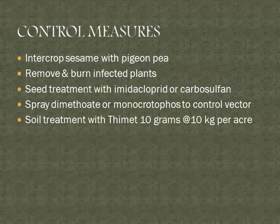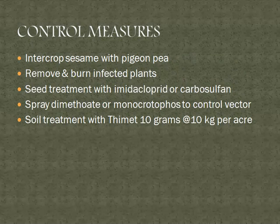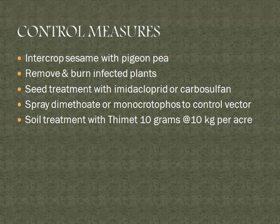Controlling measures: intercropping system — mixed crop or intercrop cultivation is very much advisable as a biocontrol strategy. Remove and burn infected plants from the field. Seed treatment with imidacloprid or carbosulfan is suggested. Spray dimethoate or monocrotophos to control the vectors. Soil treatment with Thimet at 10 kg per hectare is recommended for controlling this phytoplasma disease.